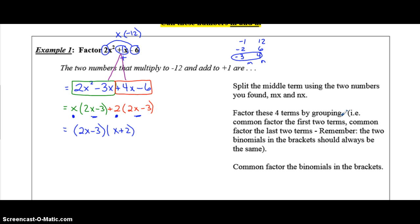All right. So, you factor the four terms by grouping. Common factor the first two. Common factor the last two. Remember that the two binomials in the brackets will be the same. And, then, common factor the binomials in the brackets.